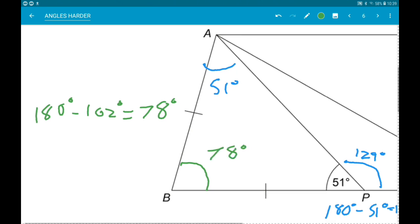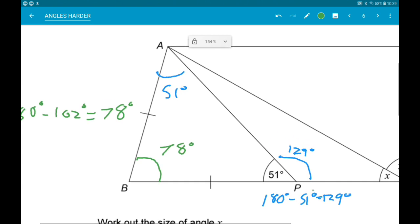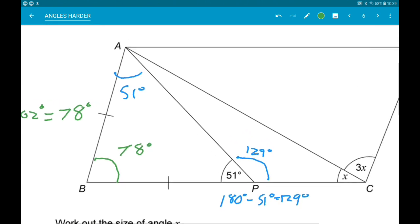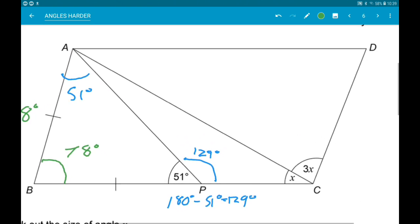Now again, opposite angles in parallelograms are the same. So that means this chap over here is also 78 degrees.